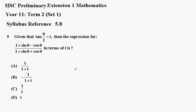Number 9. Given that tan theta over 2 equals t, the expression for 1 plus sin theta minus cos theta all over 1 plus sin theta plus cos theta in terms of t is a, b, c, or d.